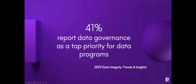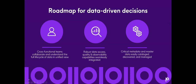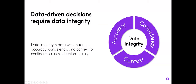The Drexel survey also found that 77% of respondents reported that data-driven decision-making is the most important goal for their organization's data programs — even overshadowing operational efficiency, cost reduction, and revenue generation. Clearly, in response to the macro trends we talked about, organizations are relying on hard data to drive decisions across all of their businesses. And 41% report that data governance is a top priority for their data programs this year. So what does a roadmap for data-driven decisions include? You should be looking at cross-functional teams that can collaborate and understand the full lifecycle of data in a single unified solution delivering enterprise-wide data literacy. It must include robust and automated data access quality and observability qualities, seamlessly integrated to achieve confidence around your most critical data. And metadata and master data must be easily catalogued, discovered, and managed to empower teams to quickly find insights and take actions. To achieve those requirements, you need data integrity — data with maximum accuracy, consistency, and context for confident business decision-making.